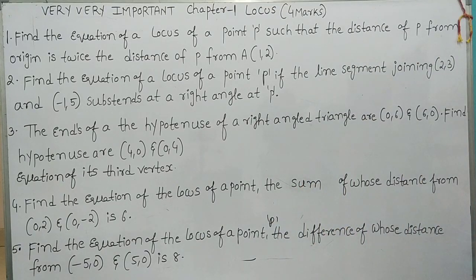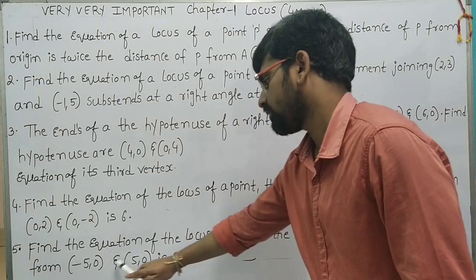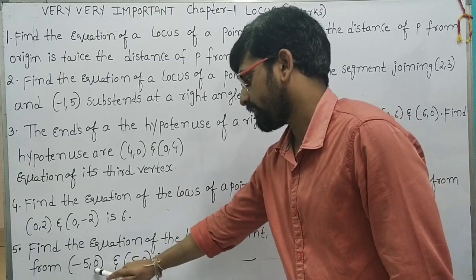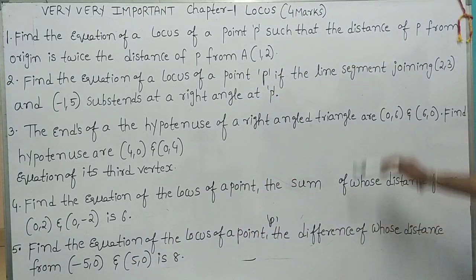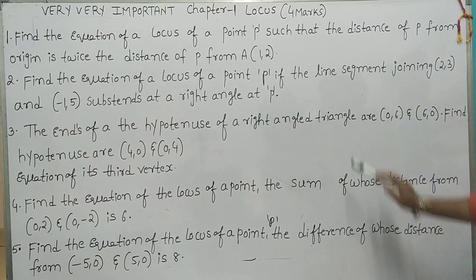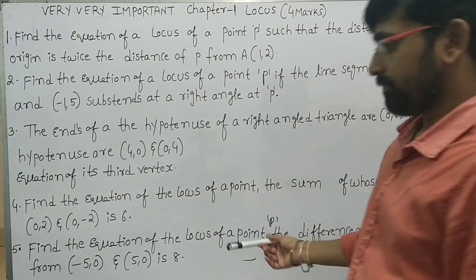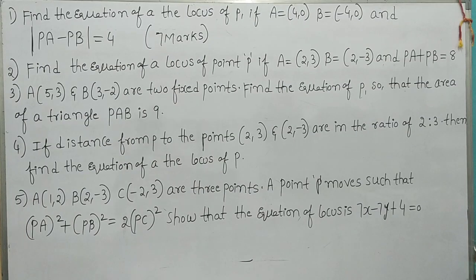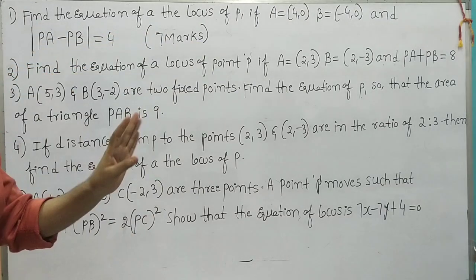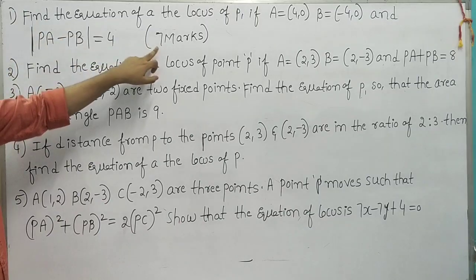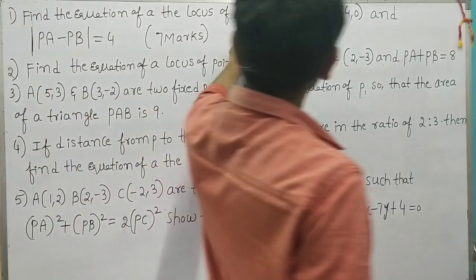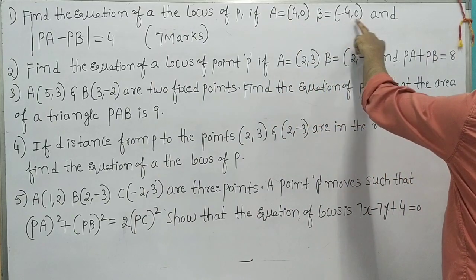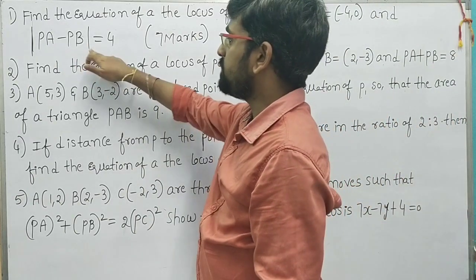Point P: the difference of whose distances from (5,0) and (-5,0) is 8. Okay, in the online 4 mark questions, so first 5 okay. Next — so here are 7 mark questions, first it says 4 mark questions. Find the equation of the locus of P if A equals (4,0), B equals (-4,0), and PA minus PB equals 4.